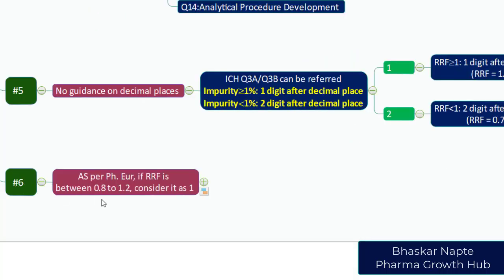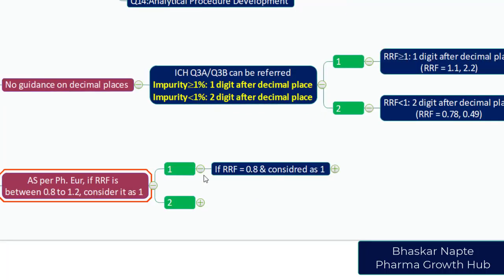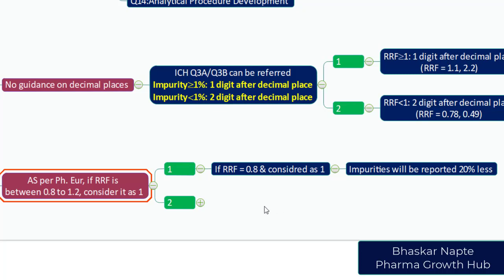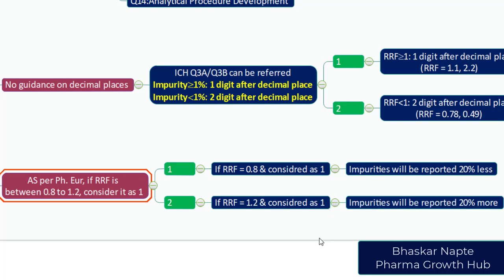Challenge number six: the PhEur guideline states that if the RRF is between 0.8 and 1.2, consider it as 1. Understanding the implication: if your actual RRF is 0.8 but you report it as 1, you will end up reporting impurities 20% less than actual. Conversely, if your RRF is 1.2 but you treat it as 1, you will end up reporting impurities 20% more than actual. These are the significant consequences of the PhEur guidance.